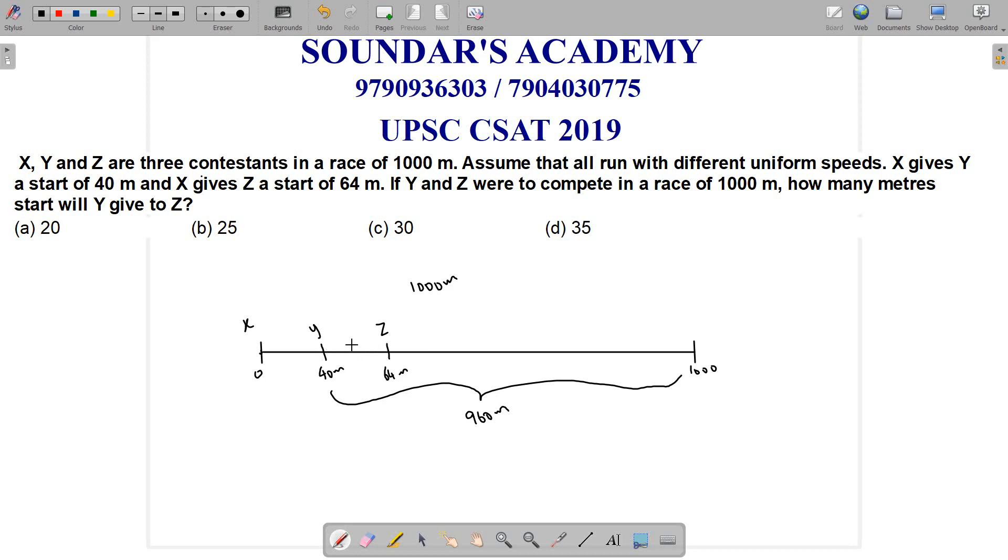Y gives 24 meters to Z for a race of 960 meters. In the 960 meter race, Y gives 24 meters to Z.